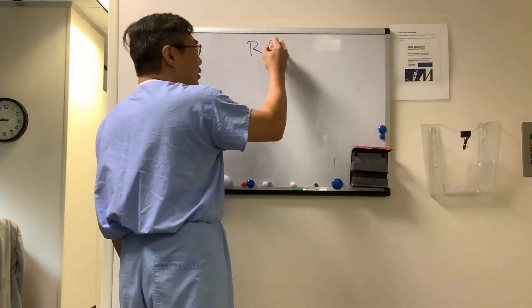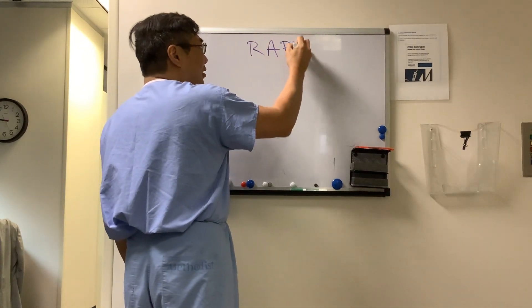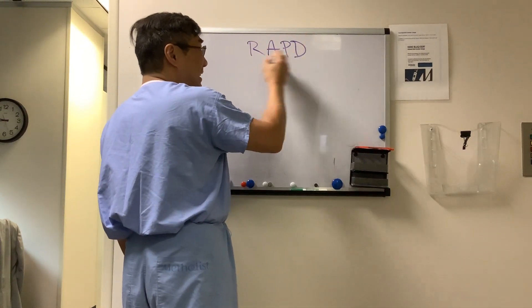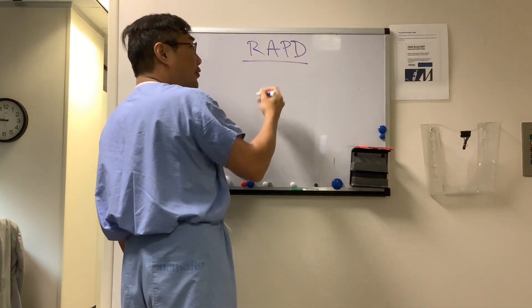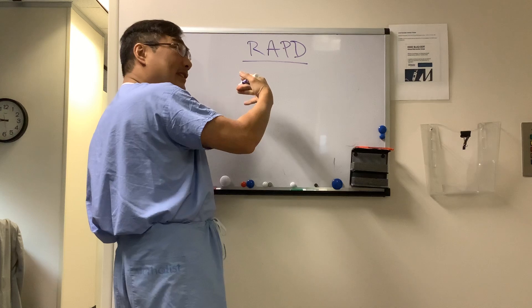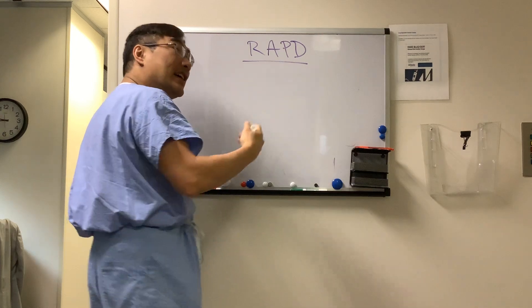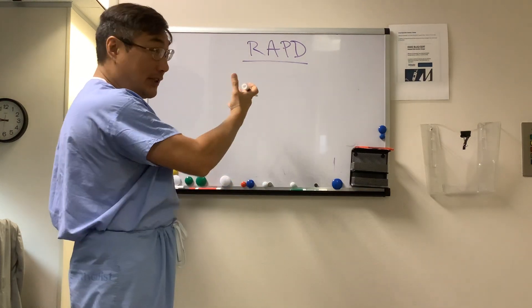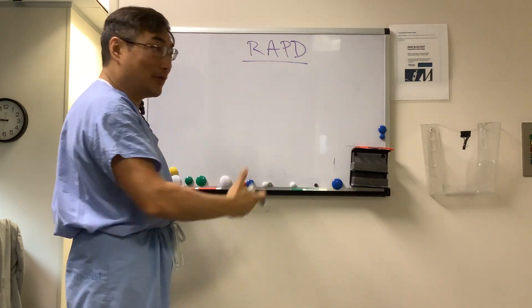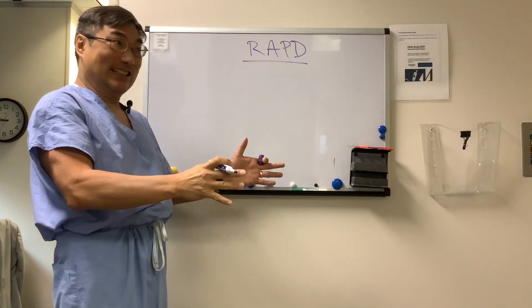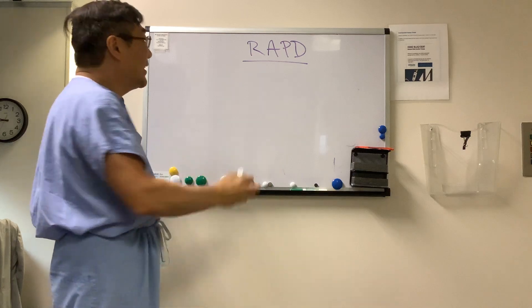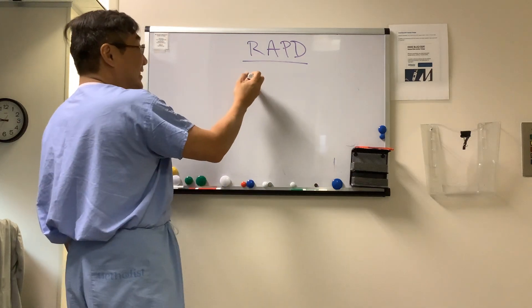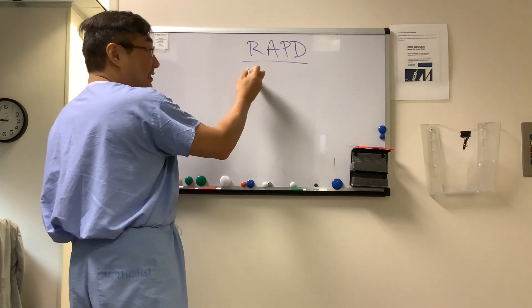Someone wanted to know if you can get an RAPD if you're in front of the cell in the retina that actually receives the pupil fiber, which is the retinal ganglion cell. And the answer is yes.